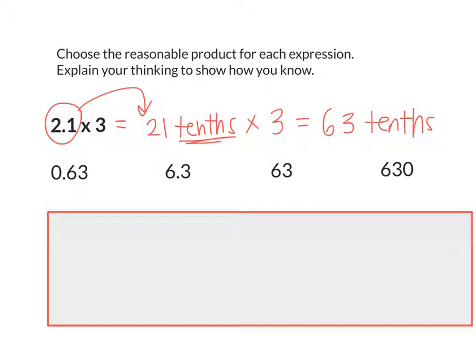So which one of these answers, they're all 63-somethings, which one shows 63 tenths? Six point three. Very good. Once again, we knew the answer was 6.3 because we knew the answer should be in the tenths units. Sixty-three tenths.